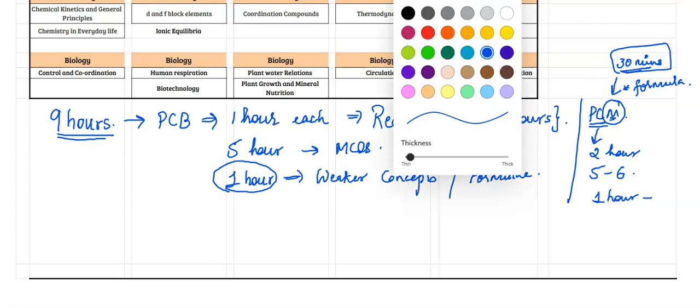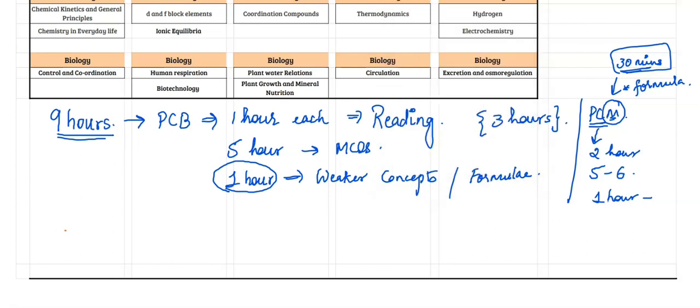Now for the MCQs, how many MCQs will be solved on a daily basis? For Bio you will do around 50 MCQs. For Maths you will be doing around 50 MCQs. For Chem in both places you will do around 40 MCQs.